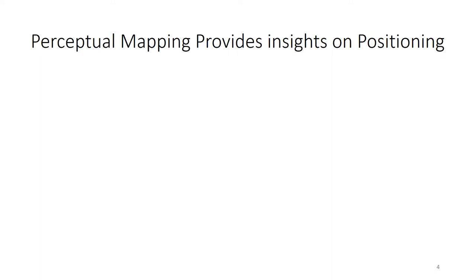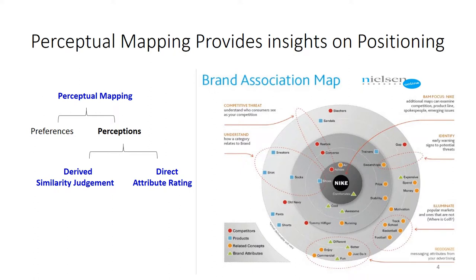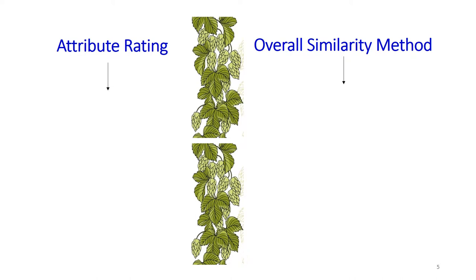She started to recall what her marketing professor taught in class about positioning, and recalled that there is a tool called perception mapping, which can help provide insights on positioning. Oftentimes, firms use perception mapping to see how their products are perceived by customers, and position their products to fill gaps in the market and gain insights about how to compete against their competitors.